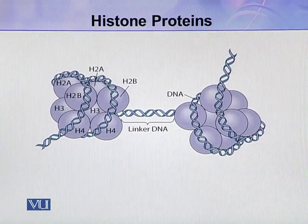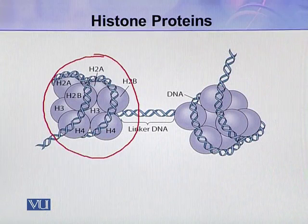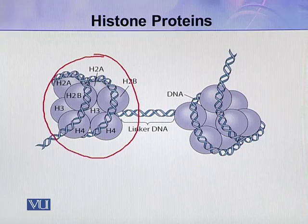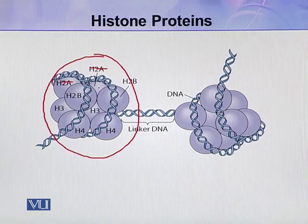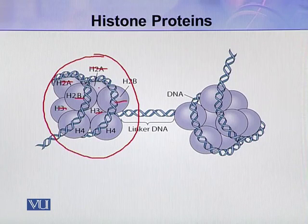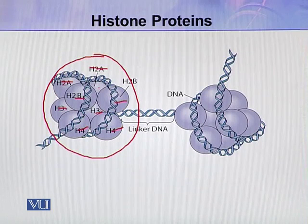Here you can see this is the histone, and this is a nucleosome. In this nucleosome there are nine molecules of histones. Here you can see H2A and H2A — these two are H2A, these two are H2B, these two molecules are of H3, and two molecules of H4. So these eight histone molecules are present inside the nucleosome.